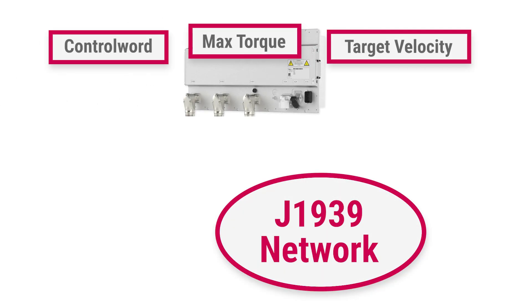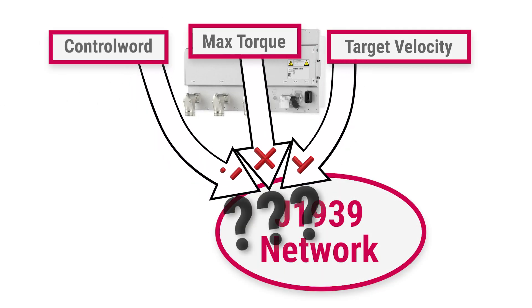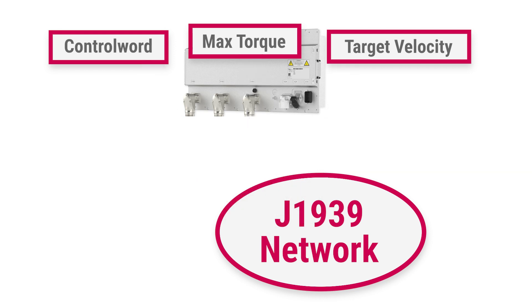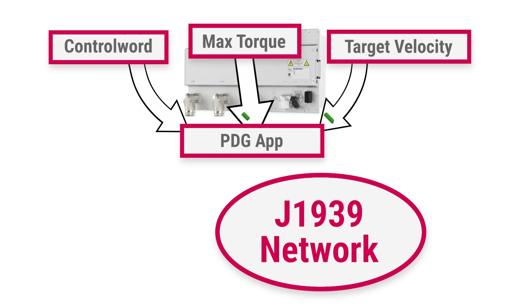By default, the inverter parameters aren't structured in a way that can be understood by the CAN J1939 network. The Process Data Gateway app takes these parameters and translates them through a gateway so that they can be used in the J1939 network.